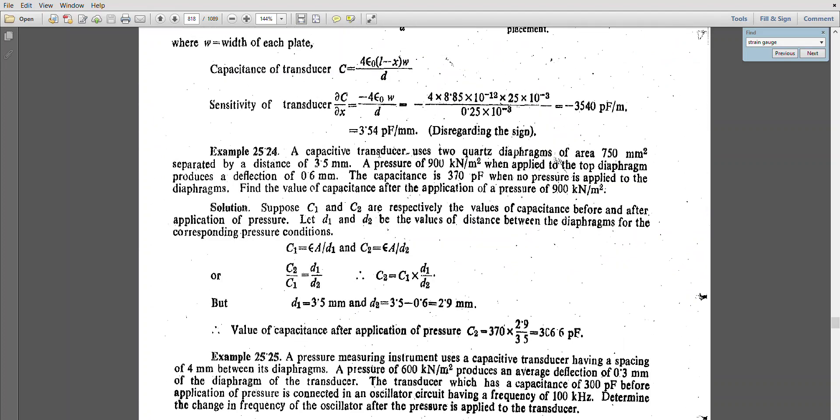You have a capacitive transducer that uses a quartz diaphragm of area 750 square millimeters separated by a distance of 3.5 millimeters. When a pressure is applied on top of the capacitive plate, it produces a deflection of 0.6 millimeters. The capacitance is 370 picofarads when no pressure is applied to the diaphragm. Find the value of capacitance.